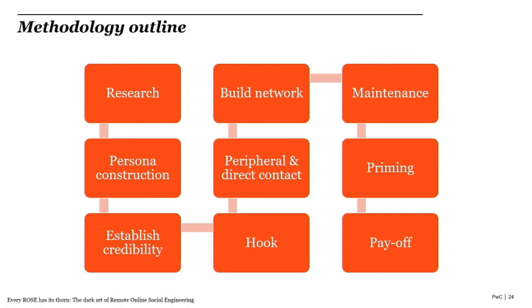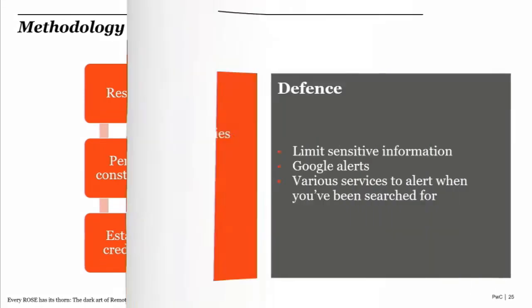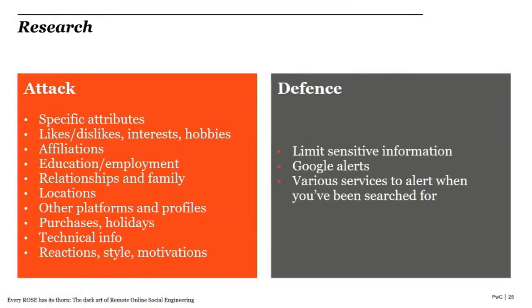So I'm going to go through the methodology of a ROSE attack. The first stage is research. An attacker would perform the same kind of research you'd expect from a spear phishing campaign, but in far more detail — looking at likes and dislikes, other platforms and profiles, relationships and family, and crucially, reactions, styles, and motivations: how a person argues, responds to good and bad news, their linguistic style, emoji use, and motivations. From a defender's perspective, this occurs before any attack is launched, so it's about preventative measures: limiting information online and using services to alert you when certain things are searched for or reused.